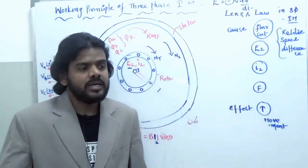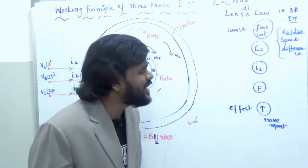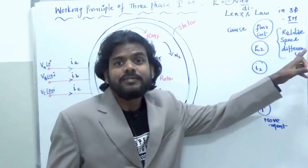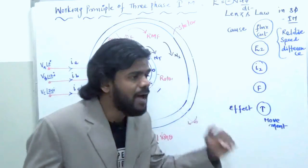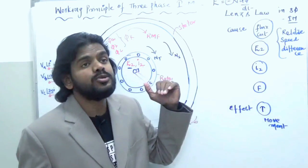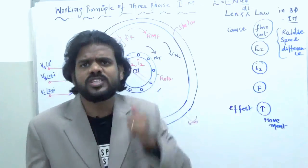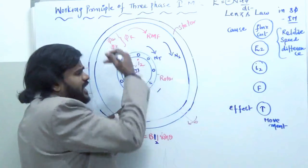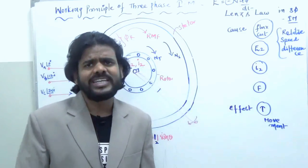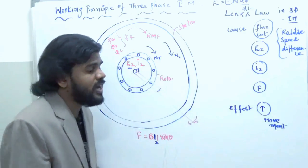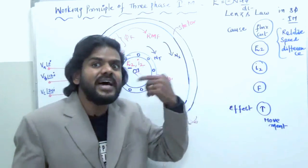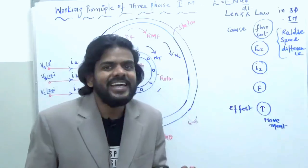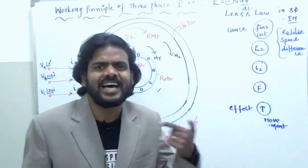In abiding by Lenz's law, the movement will happen to oppose — that is, to reduce — the relative speed difference. Now, suppose if the rotor is rotating in the opposite direction to NS, can it make the relative speed difference zero? No, it cannot. So to satisfy Lenz's law, the movement should happen in the same direction as NS, and then only it can reduce the speed difference between NS and NR.